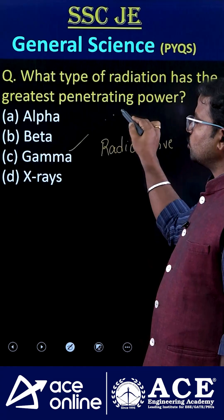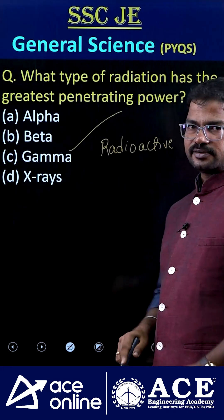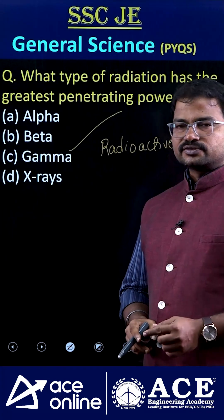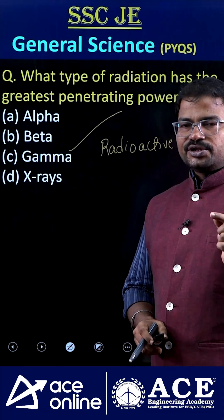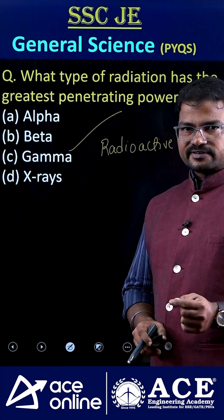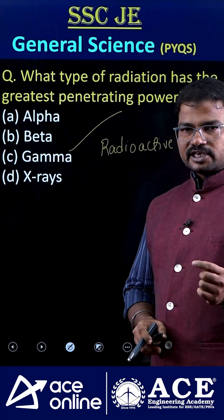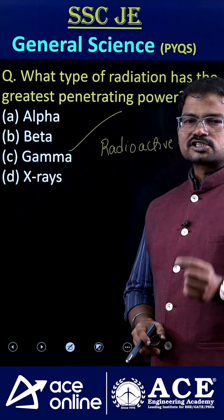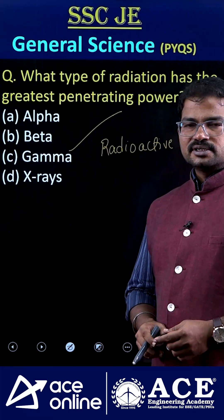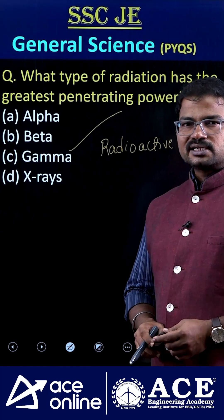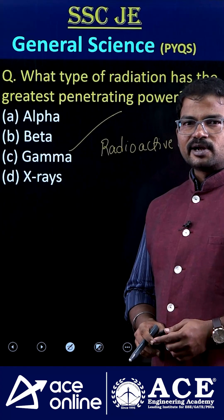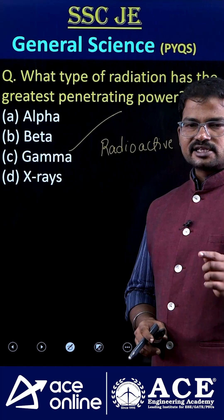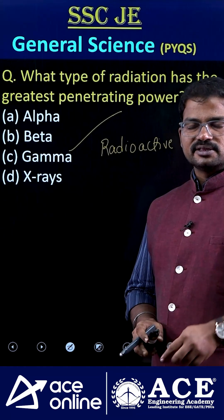So the correct answer is option C. Now I have a question for you: to produce gamma rays especially in chemotherapy, which element is mostly used — cobalt-60 or cobalt-59? If you know the answer, please comment. Thank you.